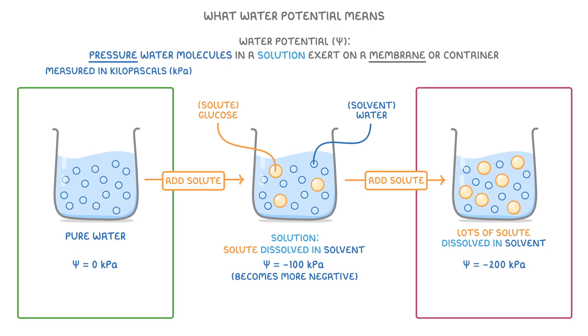So, if you think about this all together, a high water potential, closer to zero kPa, means there's a relatively high concentration of water and a relatively low concentration of solute. But a low water potential indicates a relatively low concentration of water and a relatively high concentration of solute.